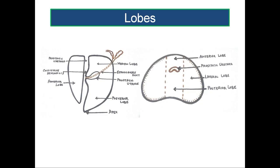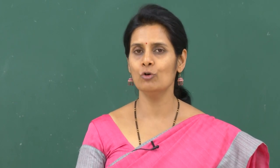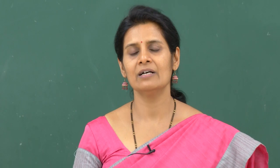Now let us look at the lobes of the prostate. Earlier it was thought that the prostate had 5 lobes anatomically. The anatomical lobes were: an anterior lobe in front of the urethra, a median lobe above the prostatic utricle and ejaculatory ducts, two lateral lobes on either side of the prostatic urethra, and a posterior lobe below the prostatic utricle and the ejaculatory ducts connecting the two lateral lobes.